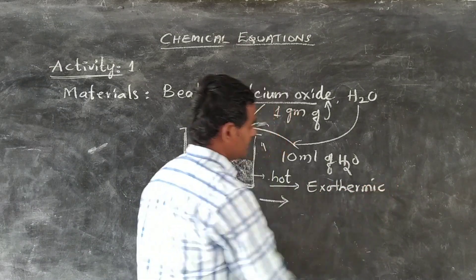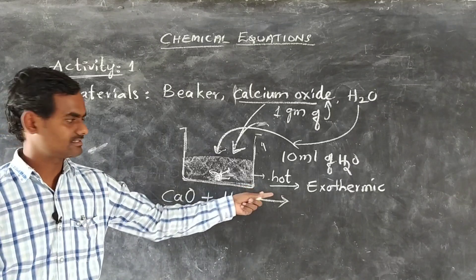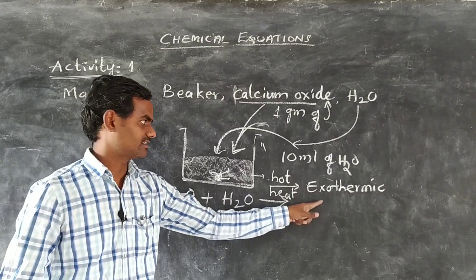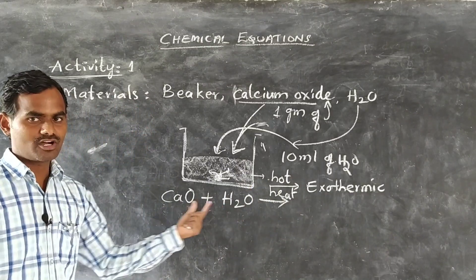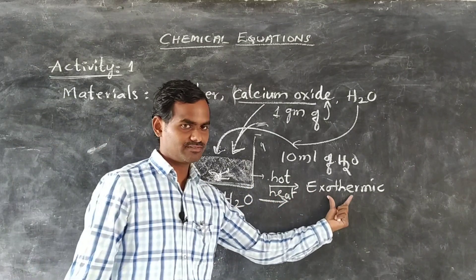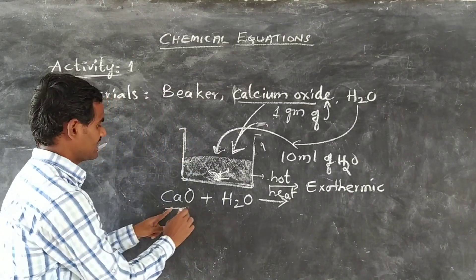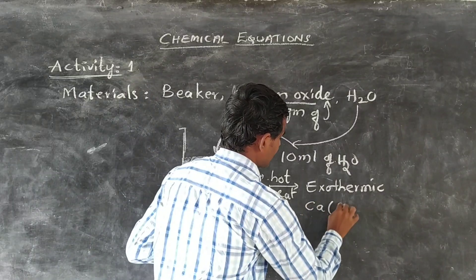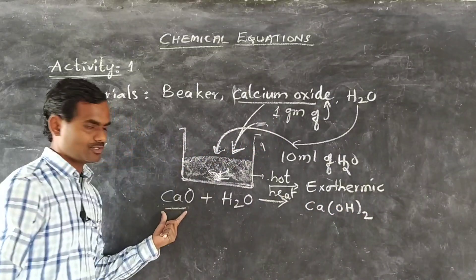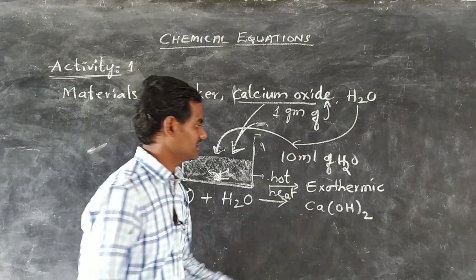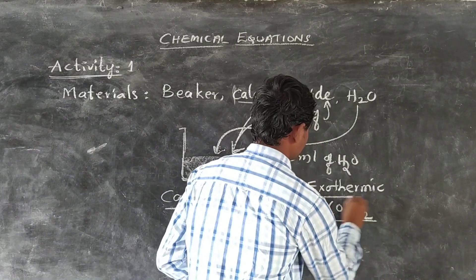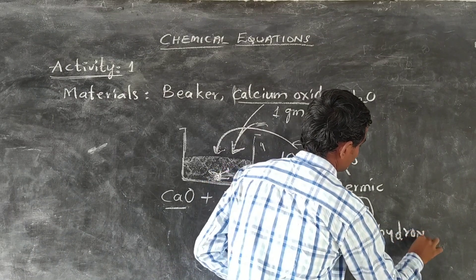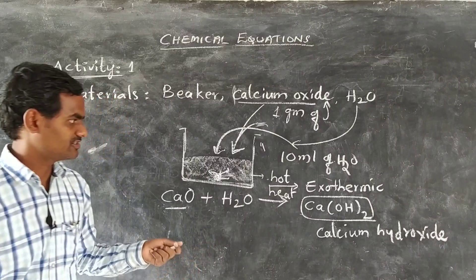In any reaction, when heat is released, that reaction is called an exothermic reaction. So, the reaction of calcium oxide with water is an example of an exothermic reaction. In this reaction, when calcium oxide reacts with water, it forms calcium hydroxide. This calcium hydroxide is basic in nature.